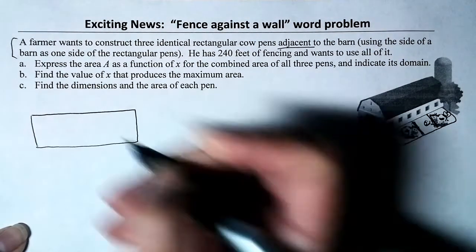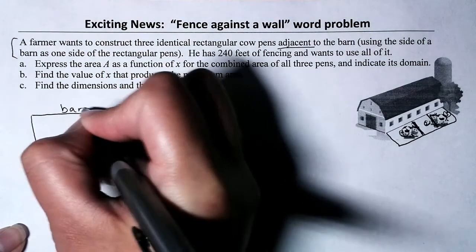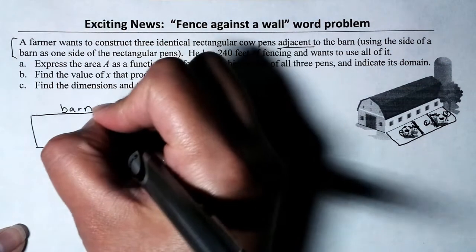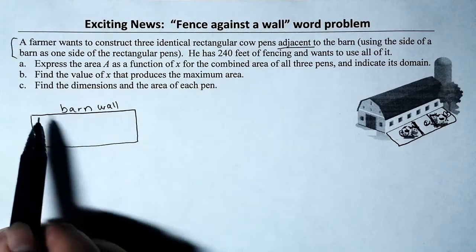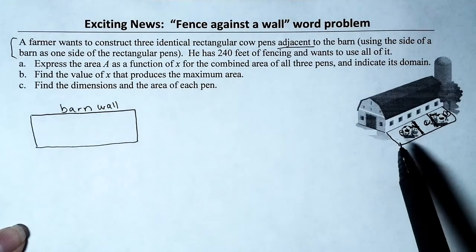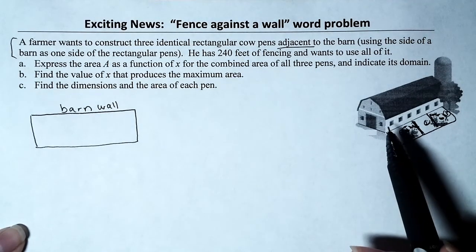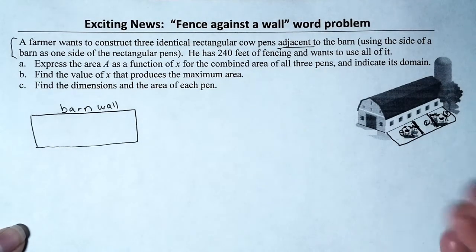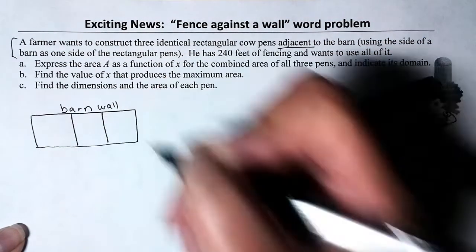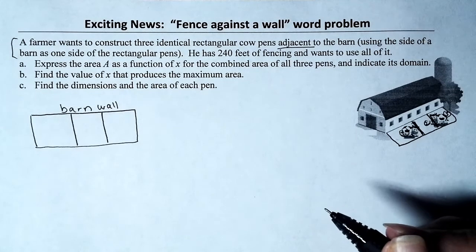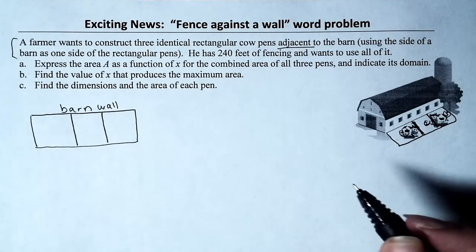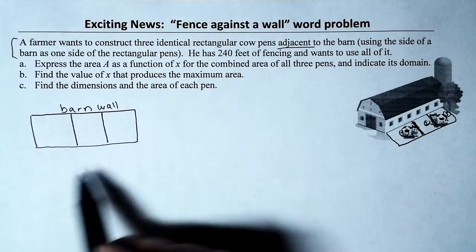The top part is the barn, so we don't need any fencing there. That's how we're placing the pens adjacent to the wall — we save money on fencing. We want to express the area as a function of x for the combined area of all three pens.